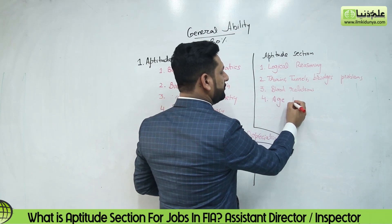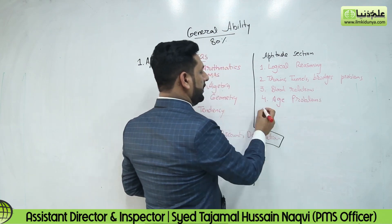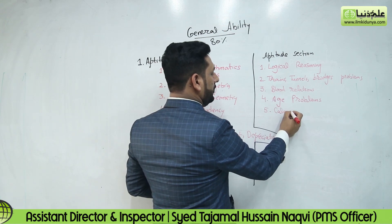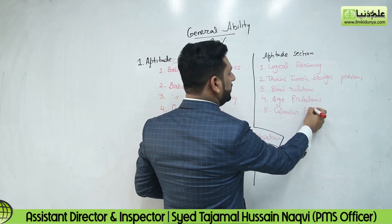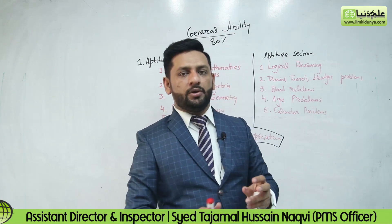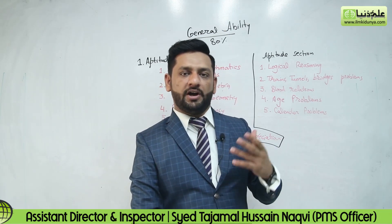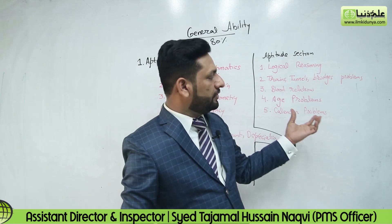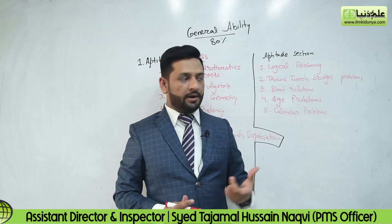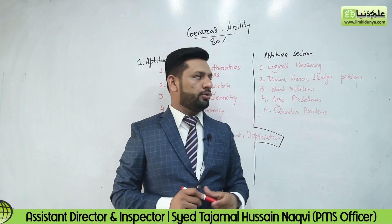Number 4 will be Age Problems. Number 5 will be Calendar Problems. If you ask me right now what day a particular date was, with a calculation of just 2-3 lines, I can tell you. For example, what day was it when Zulfiqar Ali Bhutto was hanged? Calendar problems — this used to appear in Indian aptitude exams too.